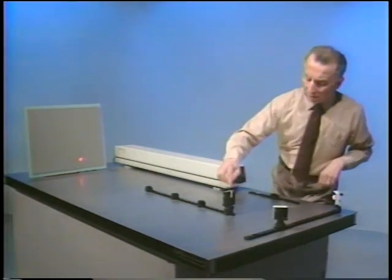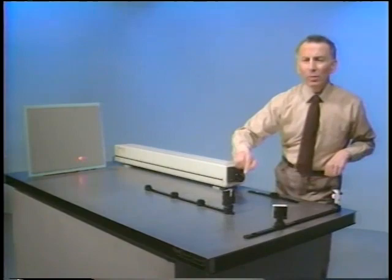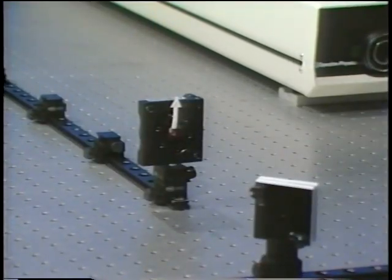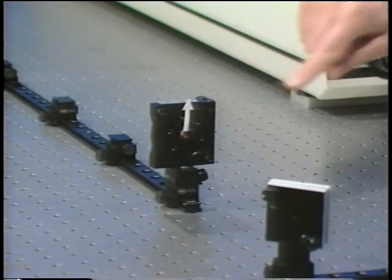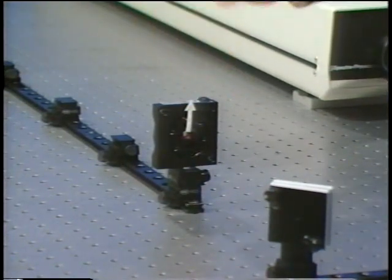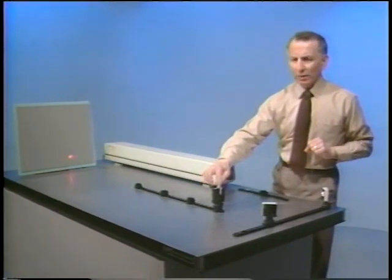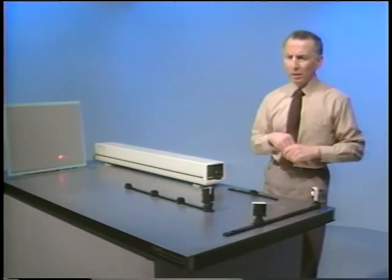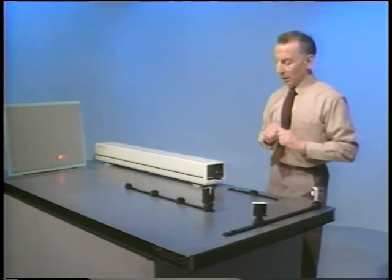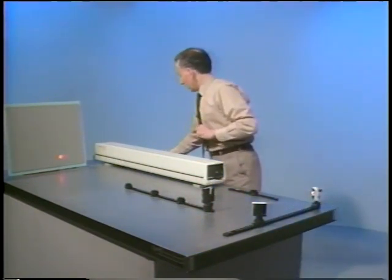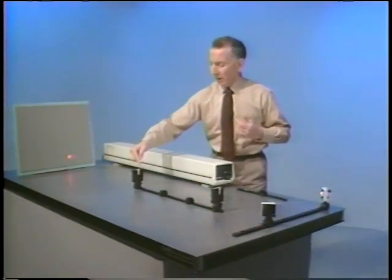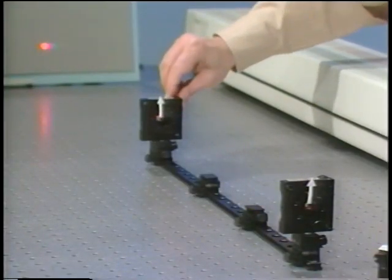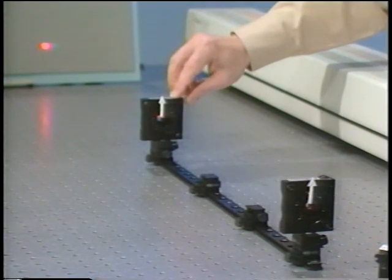This polarizer, the transmission axis of which is shown by the white arrow, sets the state of polarization of the light in this region. No matter what the state of polarization is before the light reaches the polarizer, it will clean it up and set it according to the transmission axis. Right now, the transmission axis is along the vertical. To check this, we will use the analyzer, which is another polarizer. The white arrow labels the transmission axis of this polarizer.